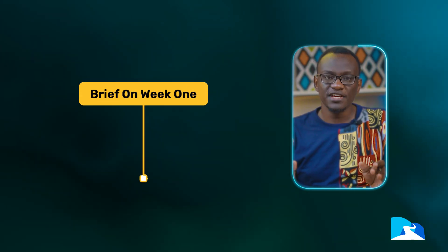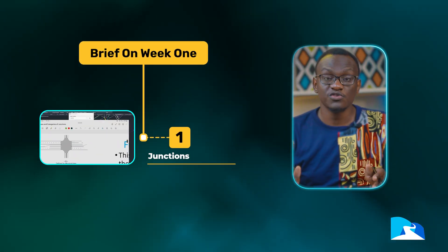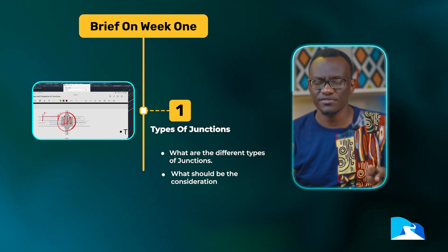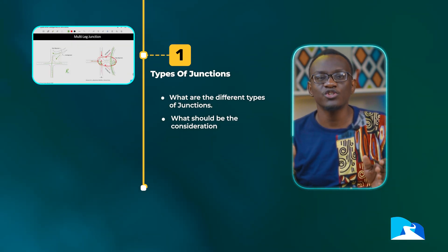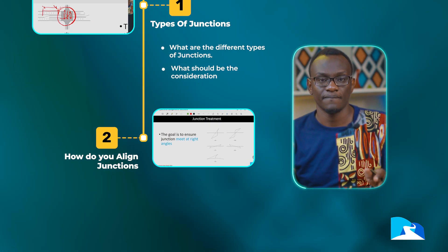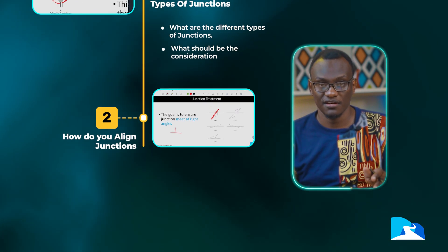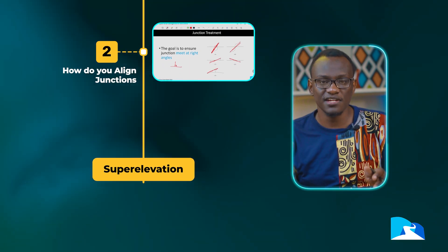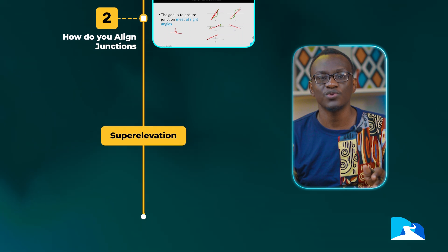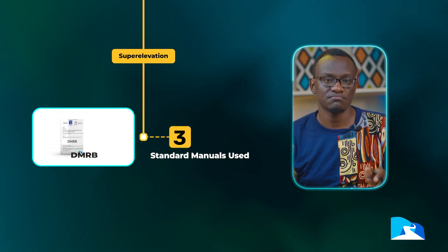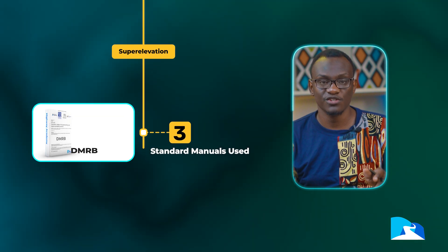For the intro, here's what we are going to be looking at. First, we are going to start with the types of junctions — what are the different types and what should be the considerations? We then go to how do you align junctions, since sometimes junctions are staggered or aligned at very acute angles. Then we go to the standards we'll use when designing these junctions: the IRRC, the AASHTO, and most of the African manuals plus the Australian manual.